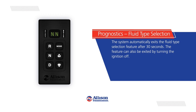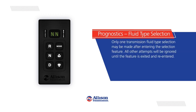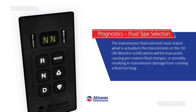The feature can also be exited by turning the ignition off. Only one transmission fluid type selection may be made after entering the selection feature; all other attempts will be ignored until the feature is exited and re-entered. The transmission fluid selected must match what is actually in the transmission, or the Oil Life Monitor notifications will be inaccurate, causing premature fluid changes or possibly resulting in transmission damage from running a fluid too long.